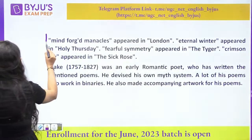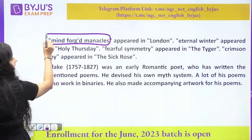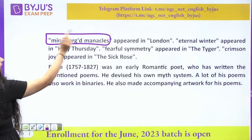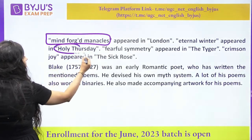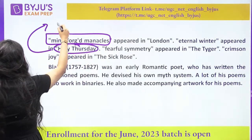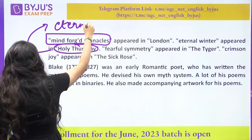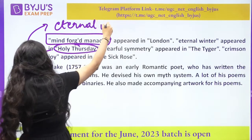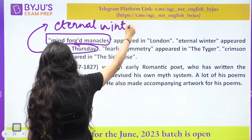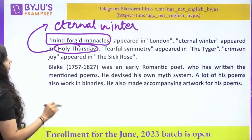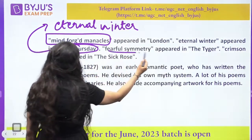Terms like 'mind-forged manacles' come in London, 'eternal winter' comes in Holy Thursday, and 'fearful symmetry' — these are very important phrases from Blake's poems. Eternal winter is coming in Holy Thursday. These are the kinds of terms and their associated poems and works that you need to know.